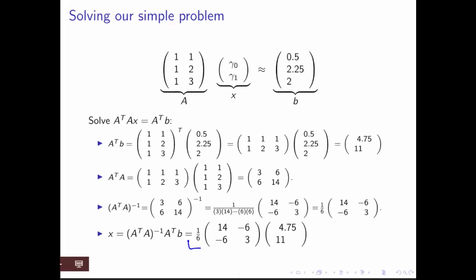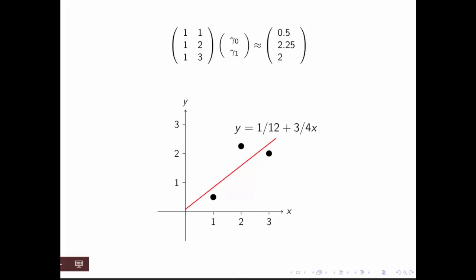And we then find that x is equal to A transpose A inverse A transpose B, which we can now compute as this matrix times that vector, which then gives us the solution 1/12 for the first component and 3/4 for the second component. And if we use that then to draw a line, we get this red line right here, which indeed seems to be a pretty good line through the three points.